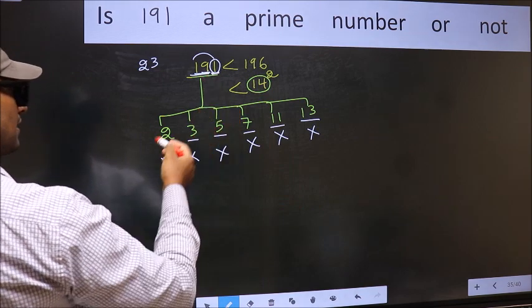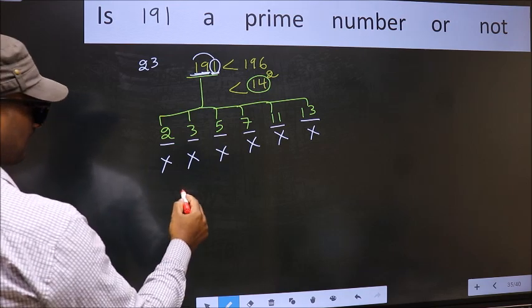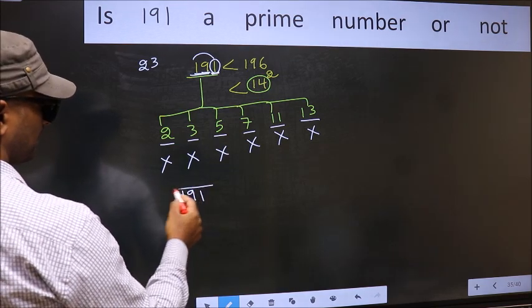So 191 is not divisible by any one of these numbers. Hence, 191 is a prime number.